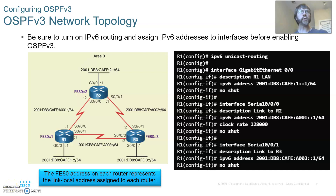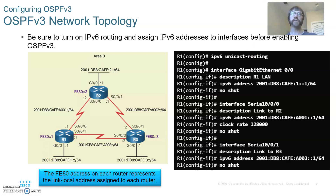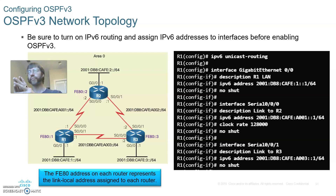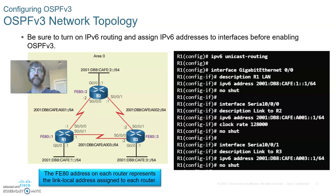We're going to start talking about actual implementation of OSPFv3. The first thing we have to do is get IPv6 working. Step one is the IPv6 unicast routing command, which we learned back in CCNA1. And frankly, everything on this screen harkens back to CCNA1 and our initial introduction to IPv6.